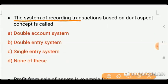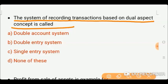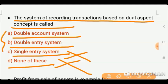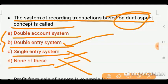Next question: The system of recording transactions based on the dual aspect concept is called — options: double account system, double entry system, single entry system, or none of these. There is a little confusion here, but the answer is simple: the dual aspect concept is based on the double entry system. So the correct answer is option B — double entry system.